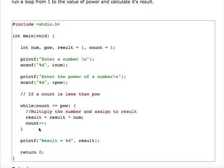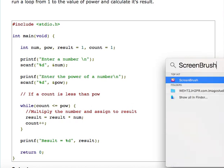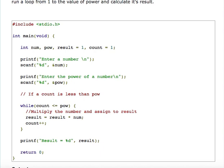So let's understand this. For example, my number is 2 and its power is 3, and the initial value of count is 1. So here I am checking whether count is less than equal to power. In this case the power is 3. Yes, 1 is less than equal to, 1 is less than 3.